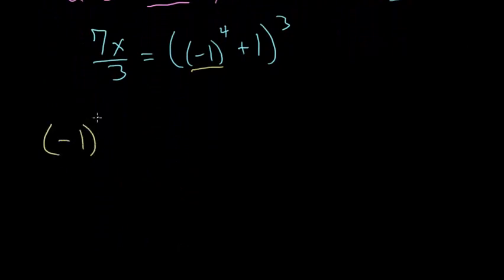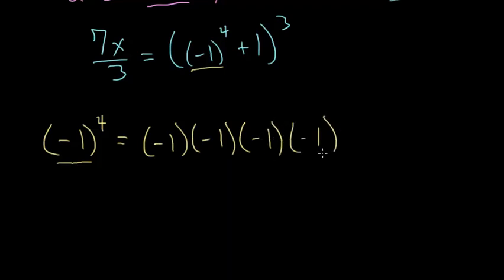A number raised to the fourth power is just the number multiplied by itself four times, and if we do this two at a time it'll be much simpler.